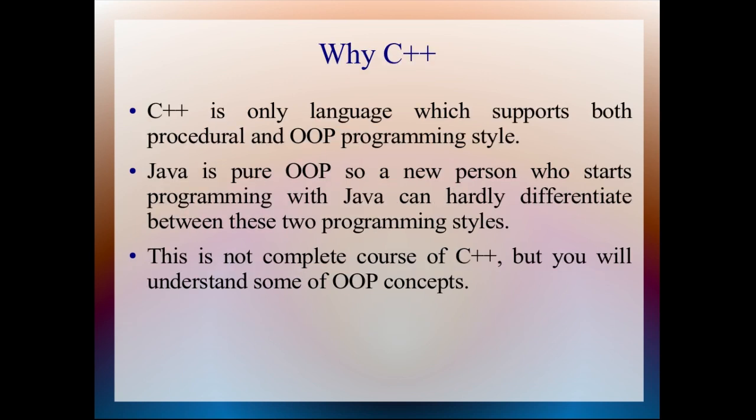Why we are using C++? C++ is the only language which supports both procedural and object oriented programming style. Java is pure object oriented programming language. So when a person starts programming with Java, he knows only object oriented programming. He did not even see how procedural programming looks.